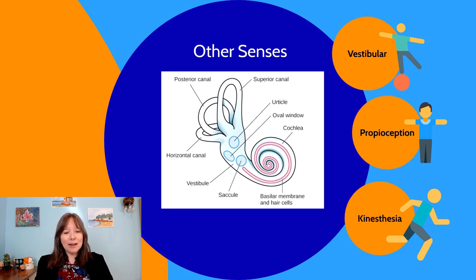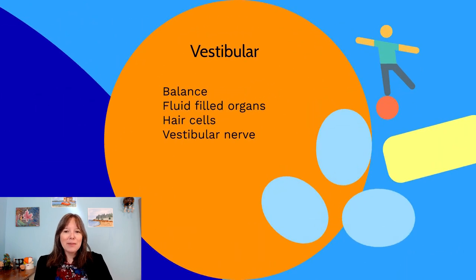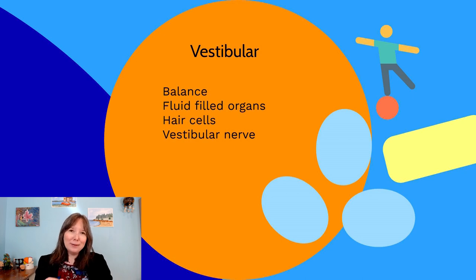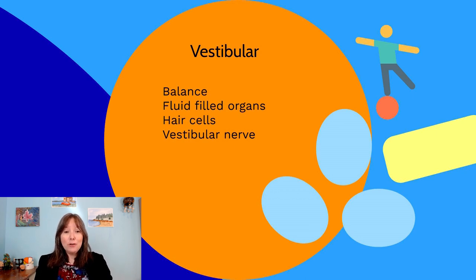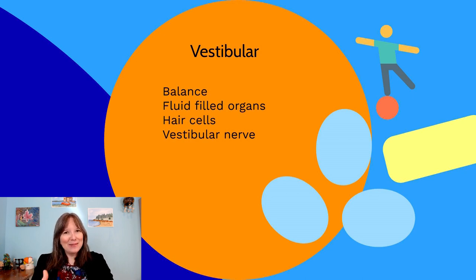Also going on in the inner ear are other sensory systems. Here we have a drawing of the inner ear with the cochlea, but also the vestibule, saccule, utricle, and oval windows, which are essential to the vestibular sense — our sense of balance. The oval windows are fluid-filled organs that also have hair cells. These hair cells vibrate as the fluid moves around, giving us a sense of balance whether we're sitting, lying, or standing. There's also a vestibular nerve, separate from the auditory nerve, that takes vestibular information to our brain — a completely separate sensory system with its own cells and nervous pathway, but located in the inner ear.